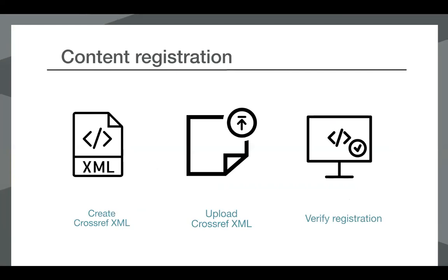Content registration is really assigning DOIs to your content through Crossref. There are three steps involved: first, creating Crossref XML — giving us your publication metadata in a standard way so that we can understand it and it can be searched and queried in standard ways. Then you upload that XML to Crossref. The last important step is to verify that registration, to make sure everything has been processed correctly and the DOI has been registered with the correct information.